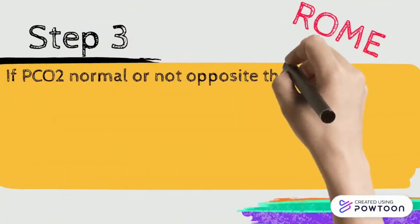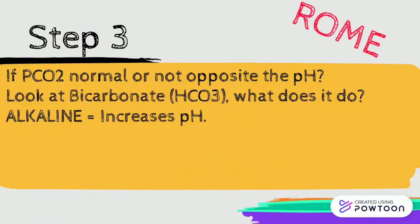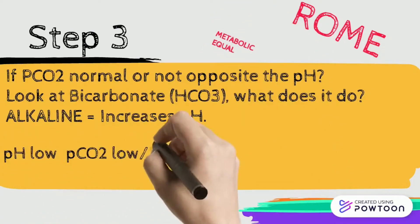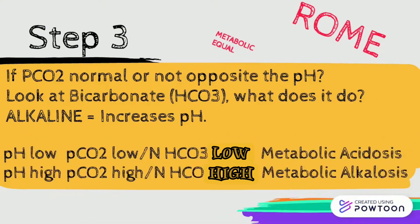Now, if the CO2 is normal or not opposite to the pH, then we look at the bicarb. Bicarb is the main way the kidneys regulate pH balance. So if your pH is low and your bicarb is also low, then this is metabolic acidosis. If your pH is high and your bicarb is also high, then this is metabolic alkalosis — given that it doesn't meet our previous criteria where the pH and CO2 are opposite to each other.